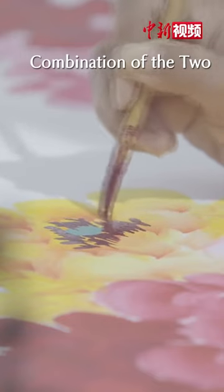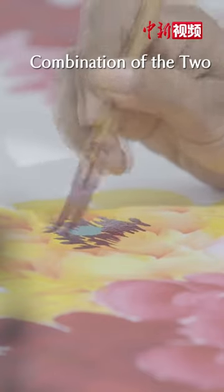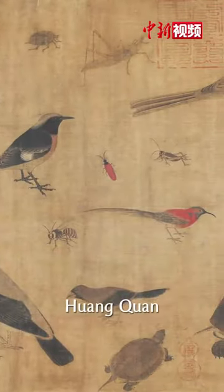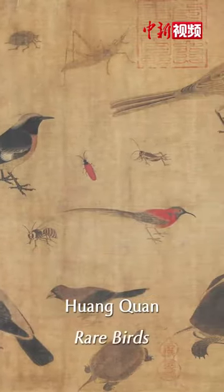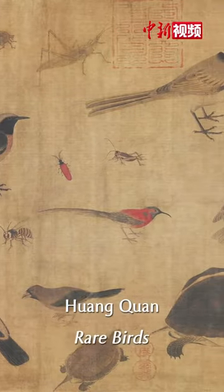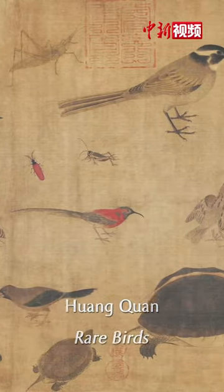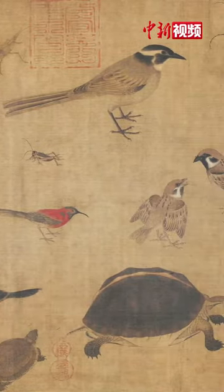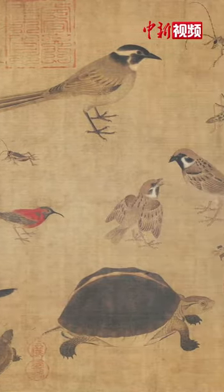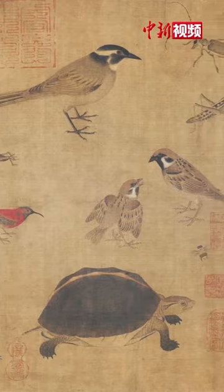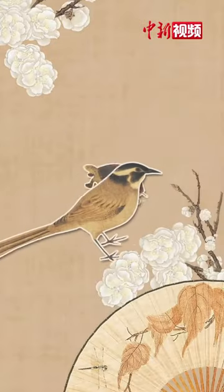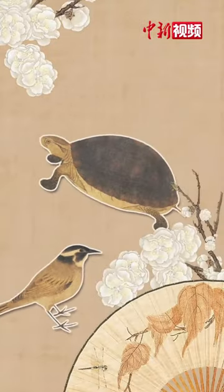Huang Quan's painting work, Rare Birds, vividly depicts 24 kinds of animals in fine strokes, including birds, turtles and insects.